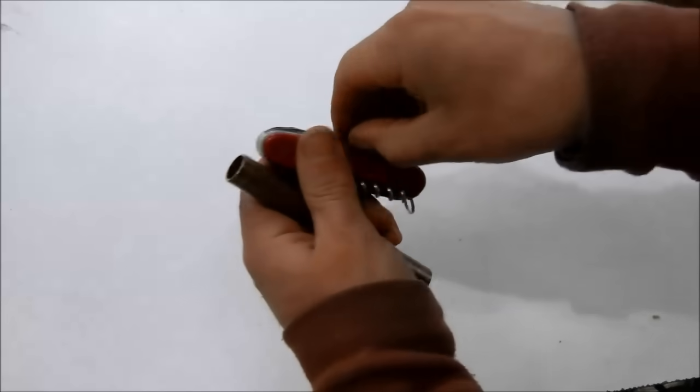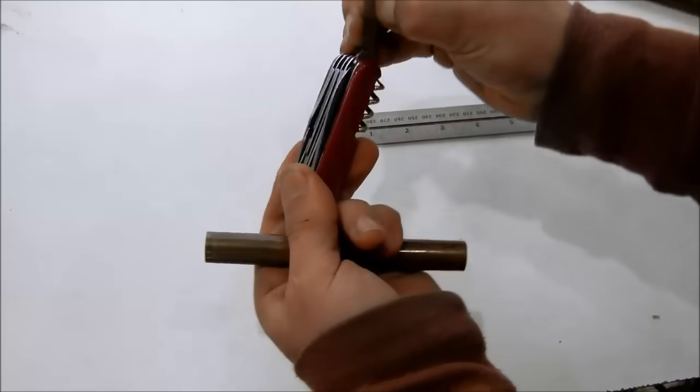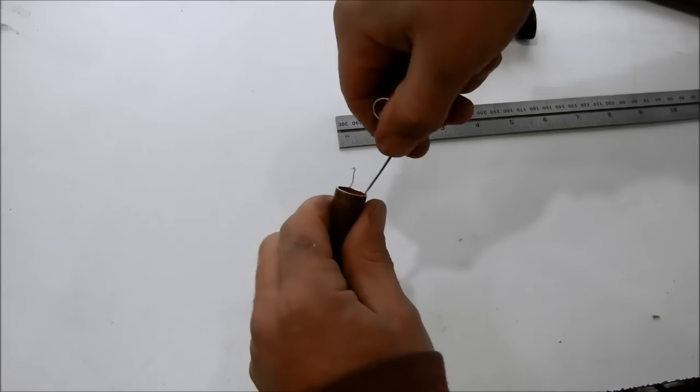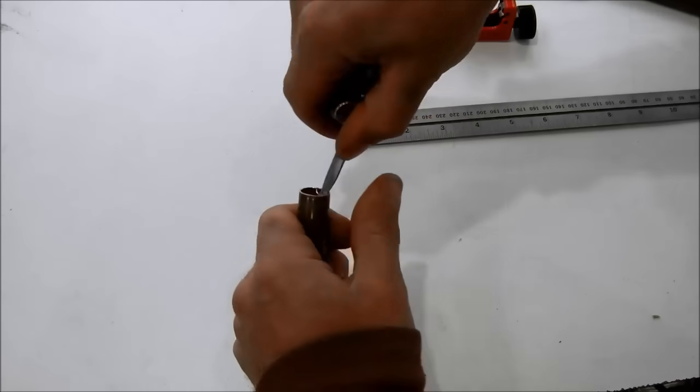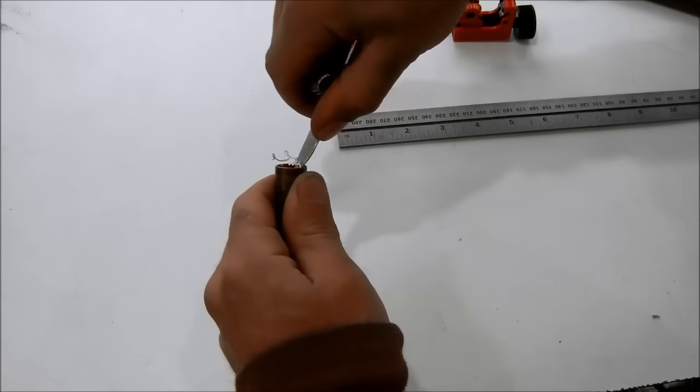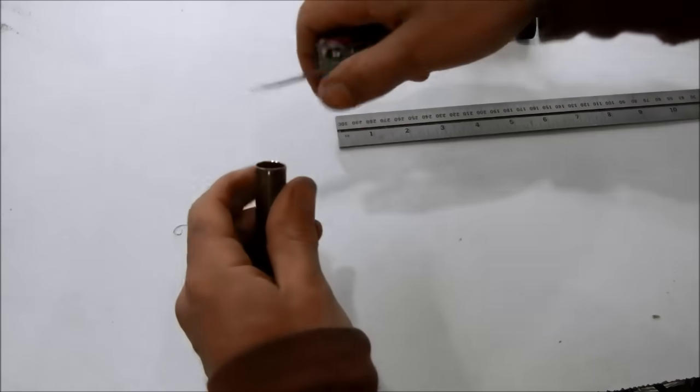Now we have to deburr the inside. I am going to use a knife for that. You want to make a bit of a chamfer so that later when we make the plunger it will go in easy.